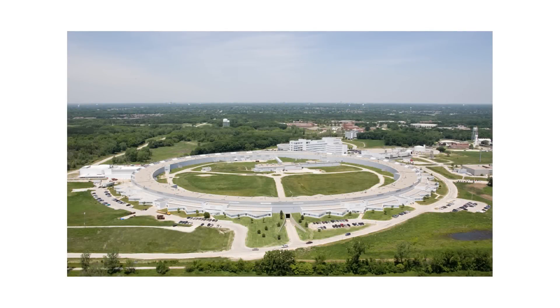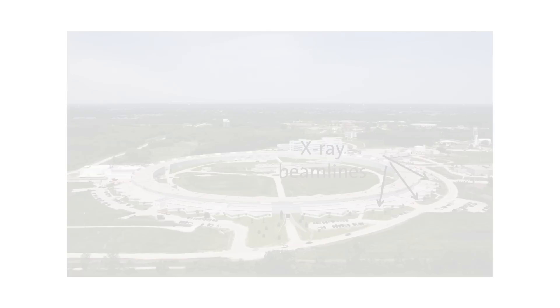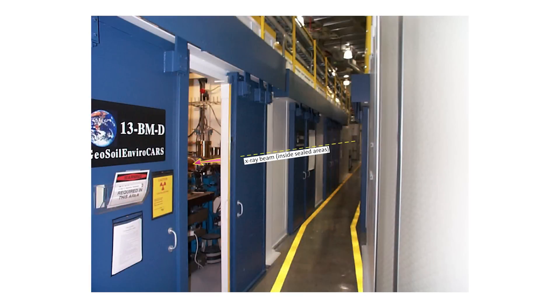What is a synchrotron? A synchrotron, in this case, is a ring of electrons flying around at about the speed of light. When you bend that beam of electrons, you get x-rays called synchrotron radiation. Those x-rays come off at a tangent to the beam line. When you go into the ring, you can see these coming off — bright x-rays.